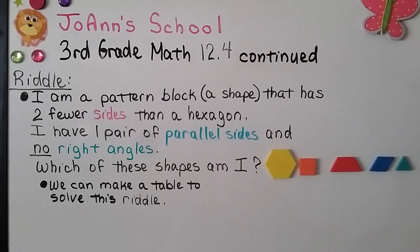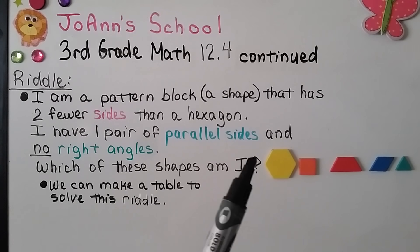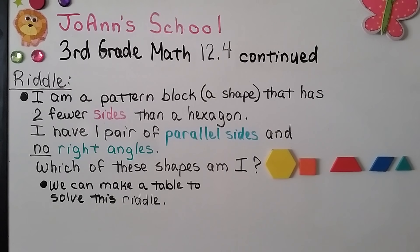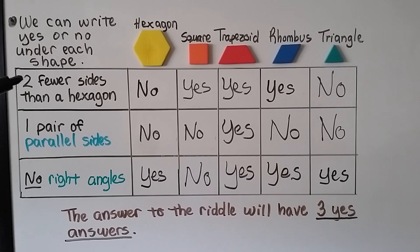Here we have a riddle. It says: I am a pattern block shape that has two fewer sides than a hexagon. I have one pair of parallel sides and no right angles. Which of these shapes am I? We have a hexagon, a square, a trapezoid, a rhombus, and a triangle. We can make a table to solve this riddle, showing two fewer sides than a hexagon, one pair of parallel sides, and no right angles.